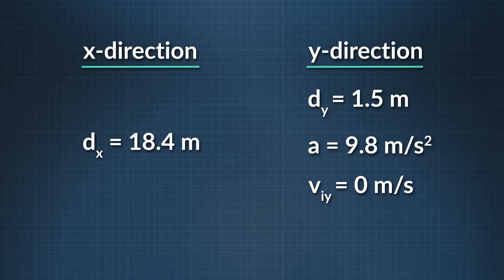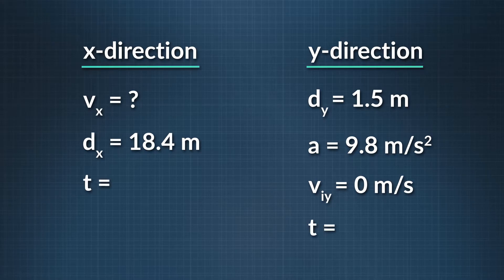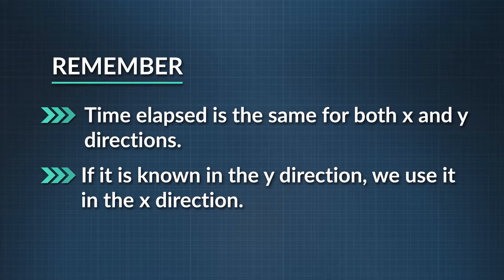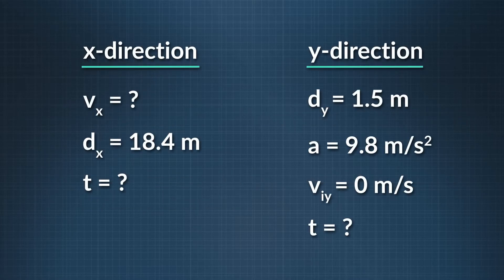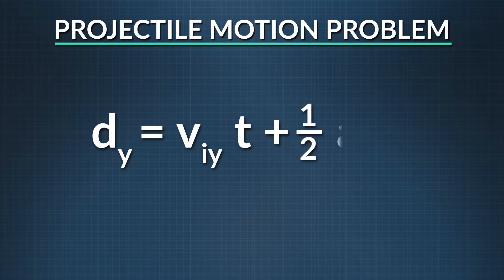Our unknown quantity is the horizontal velocity of the ball as it leaves the pitcher's hand. Now that we have all of this information, we need to solve for time and use that to get velocity. Time is the one variable that is the same for x and y — if we solve for it in the y direction, we can use it in the x direction. We have enough information in the y direction column to solve for our hang time. The equation we need has time, acceleration, vertical velocity, and vertical distance.